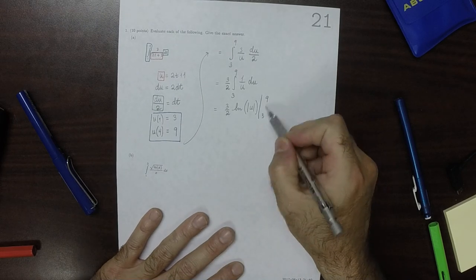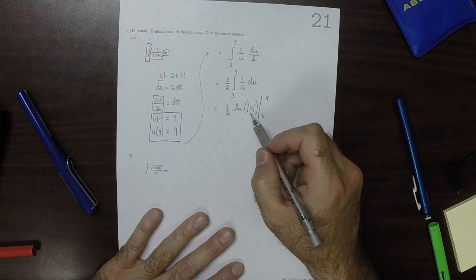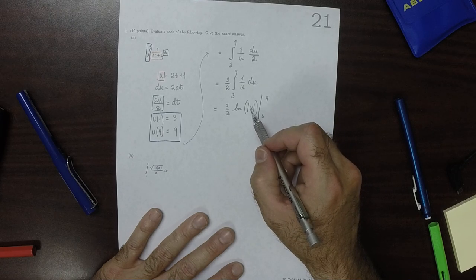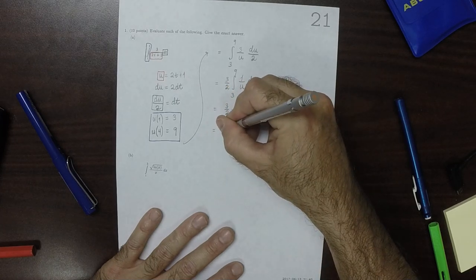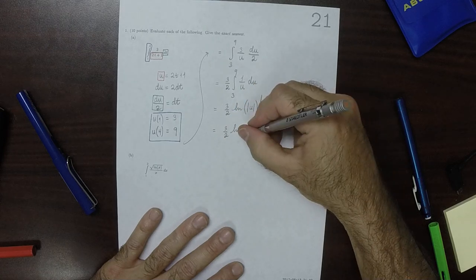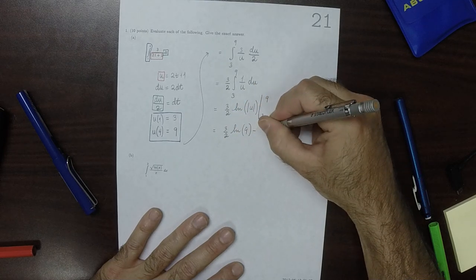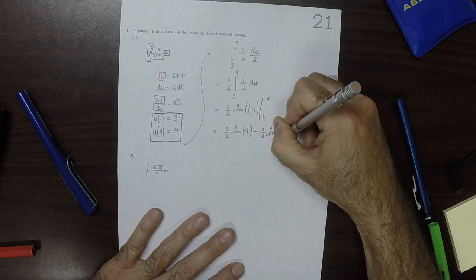Well, because the evaluation points, the evaluation interval is positive, that means that the absolute value has no effect. So that would be 3 halves log of 9 minus 3 halves log of 3.